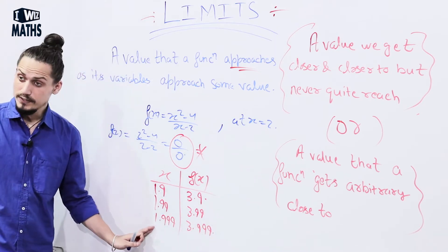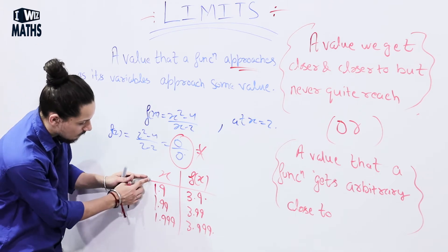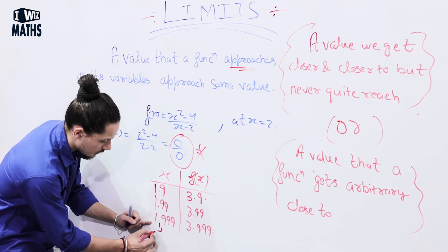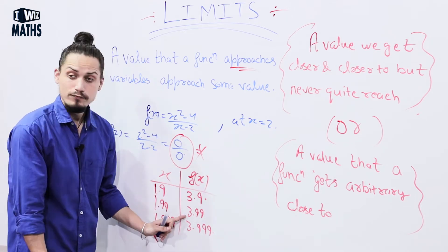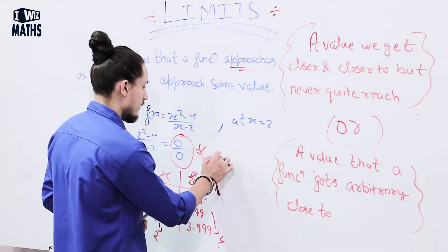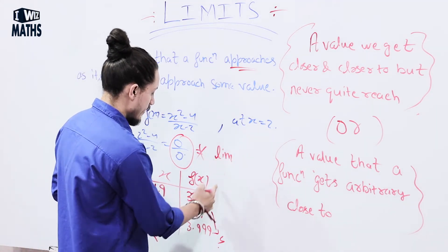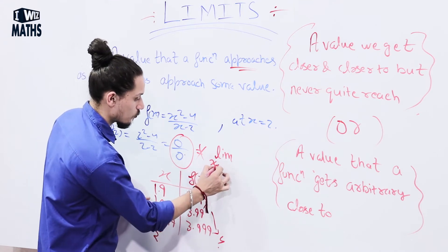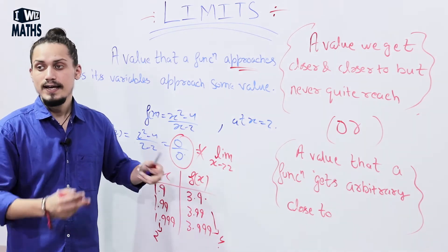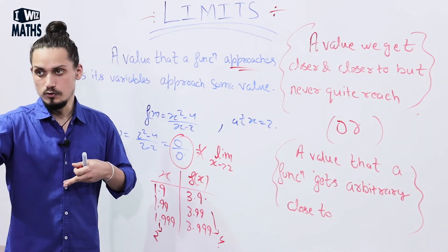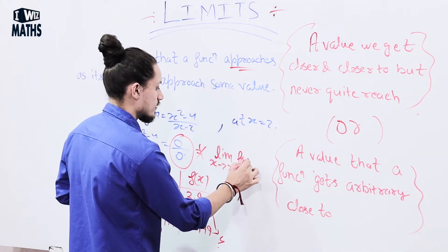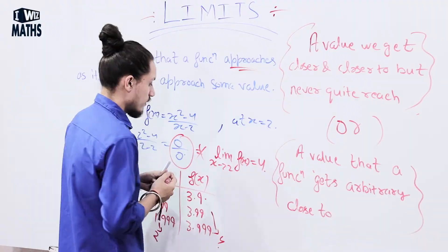As we observe this, we can say: as the value of x is approaching 2, the value of f(x) is approaching 4. So I can write it mathematically as: limit x approaches 2. Limit x approaches 2 doesn't mean x equals 2 — it means x is reaching there slowly. So as limit x approaches 2, the value of f(x) equals 4.